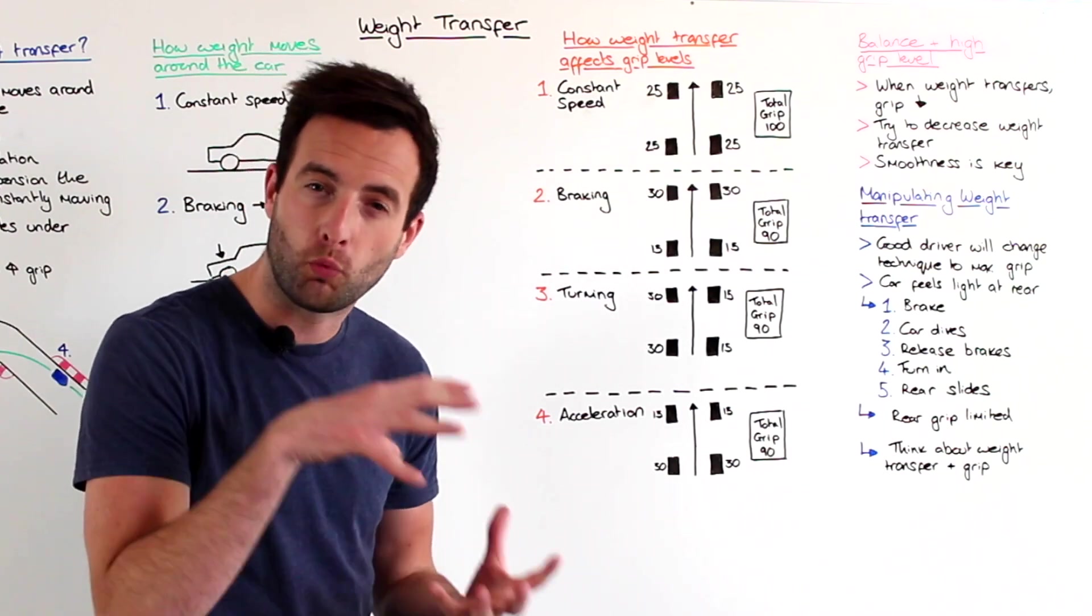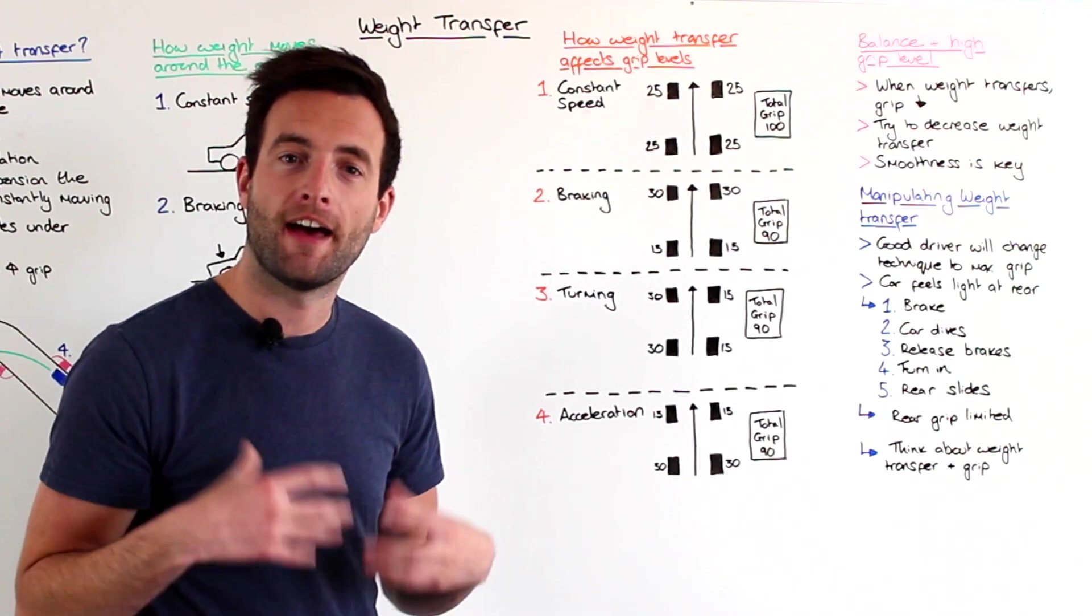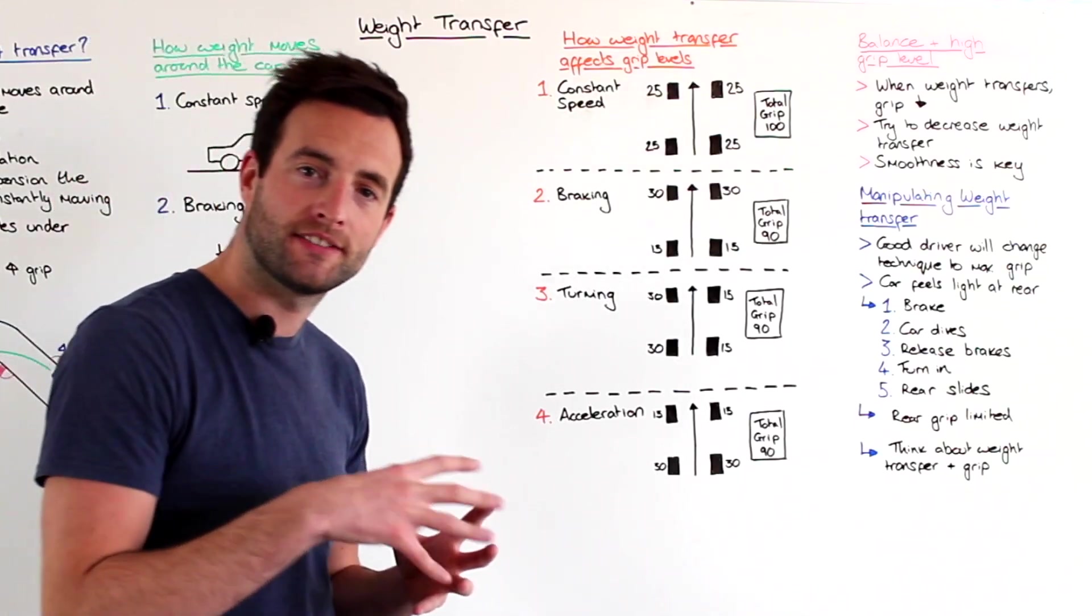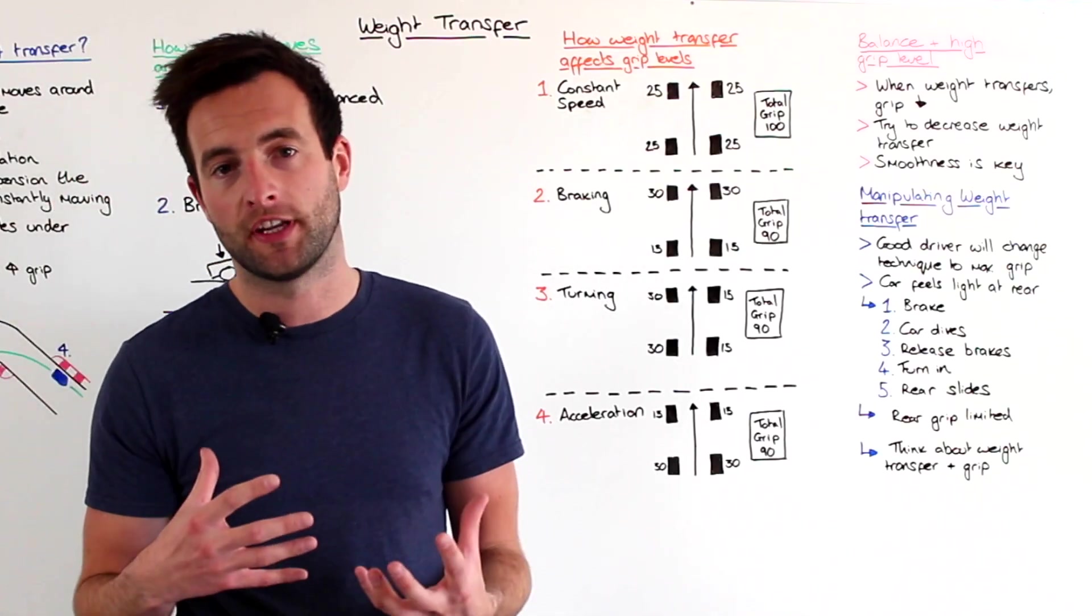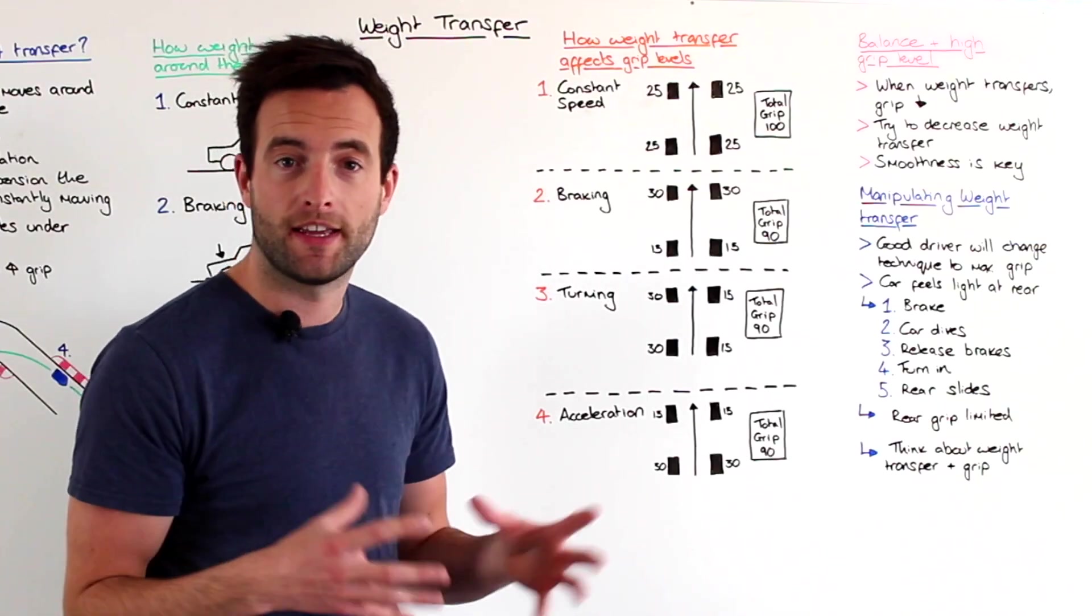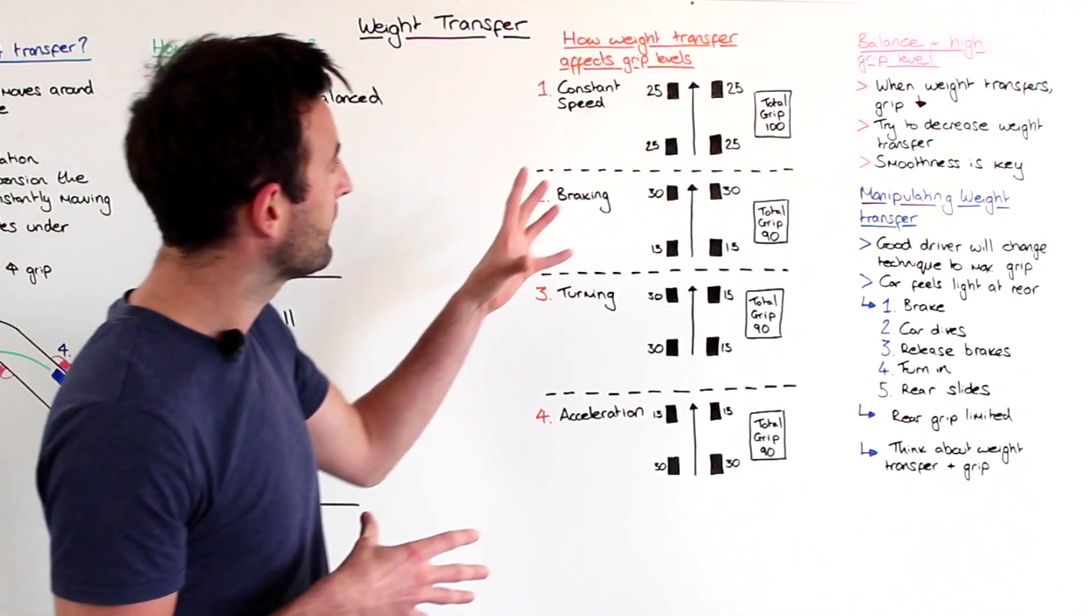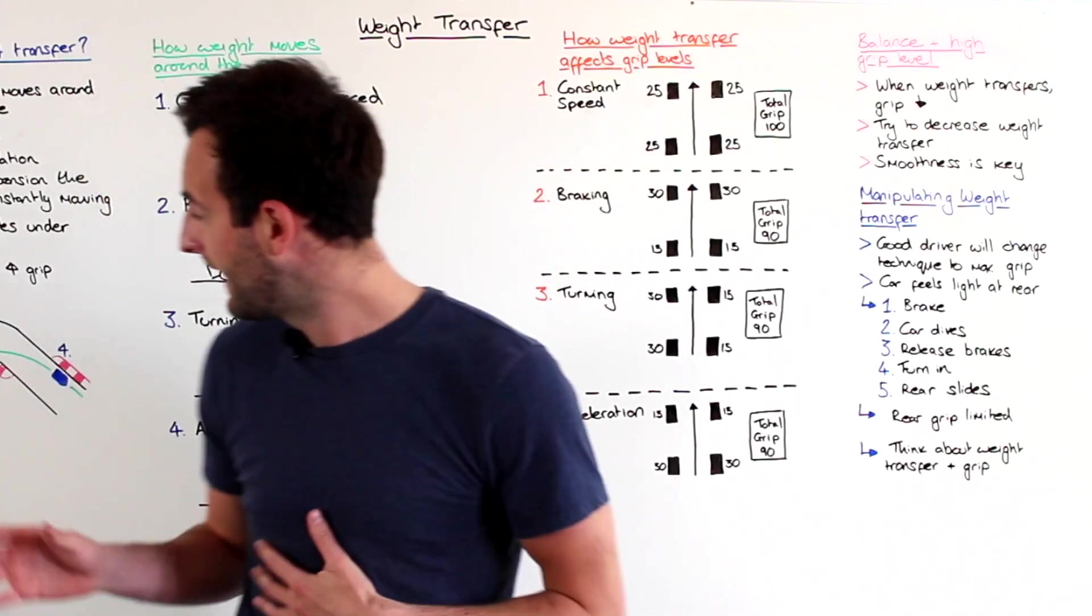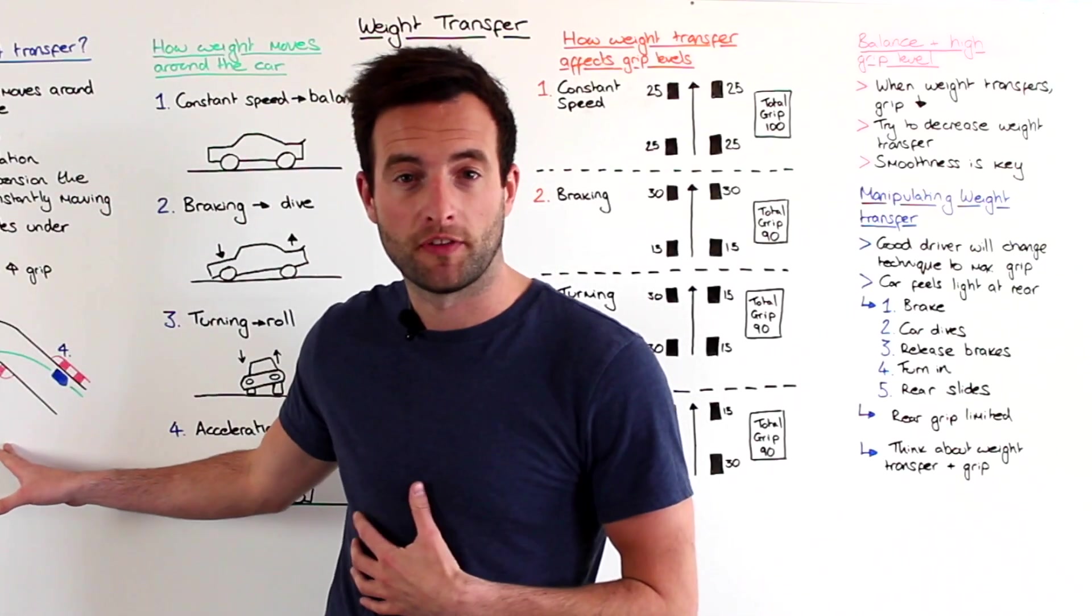Now as I just mentioned, the amount of vertical load, or the weight going through a tire affects how much grip it has. So you can imagine that when we're accelerating, when we're braking, when we're turning, the grip for each tire is increasing or decreasing by a different amount. So to explain that we have a few diagrams just here. And they relate again to the right hand corner that you can see here.